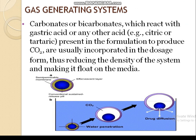Now, the gas generating system — what is happening here? As you can see in the diagram, water penetrates the formulation, there is a release of carbon dioxide, and finally the drug diffuses. Carbonates or bicarbonates react with gastric acid, or with acids like citric acid or tartaric acid present in the formulation, to produce carbon dioxide. This reduces the density of the system, making it float on the gastric media.